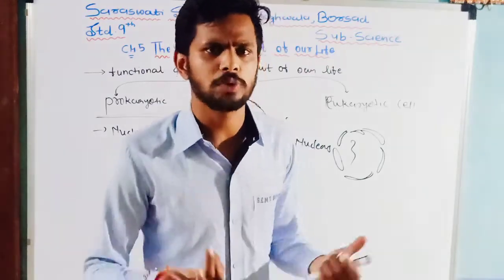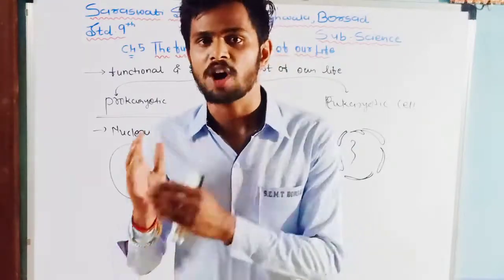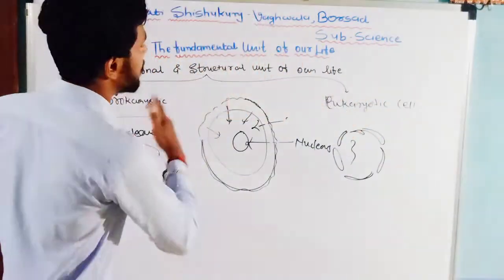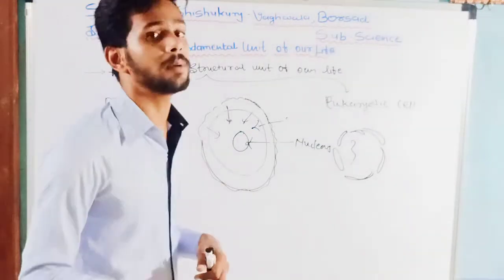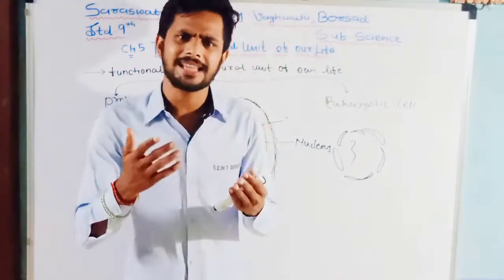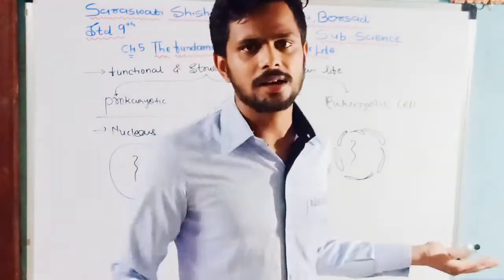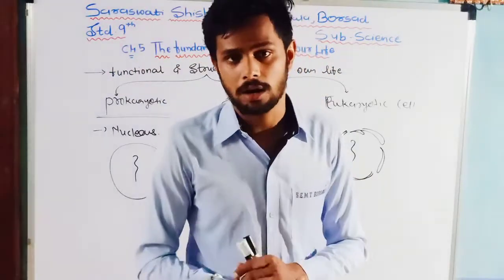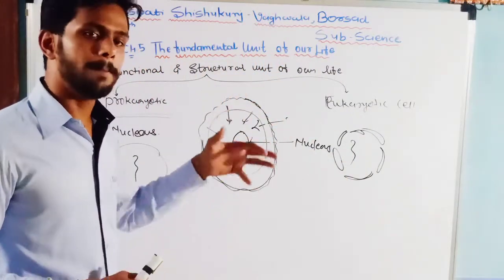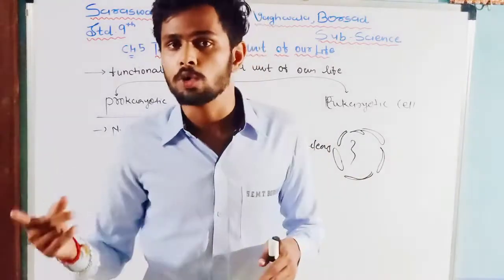Next we are talking about the Golgi apparatus. The Golgi apparatus is known as the packaging unit of the cell. Just as a factory has assembling, manufacturing, packaging, and transportation, similarly the cell has these functions. The endoplasmic reticulum is the manufacturing plant for lipids, proteins, enzymes, and hormones. These materials are then transferred from the endoplasmic reticulum to the Golgi apparatus via vesicles.